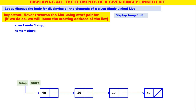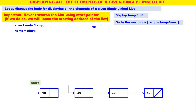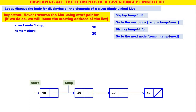Display temp of info. What is temp of info right now? 10. So 10 is displayed. After that, we have to move temp to the next node, because temp should go to the next node and display 20. Therefore, go to the next node: temp is equal to temp of next. So temp will move to the next node. Now temp is containing the address of node 20. Display temp of info — so 20 will be displayed.